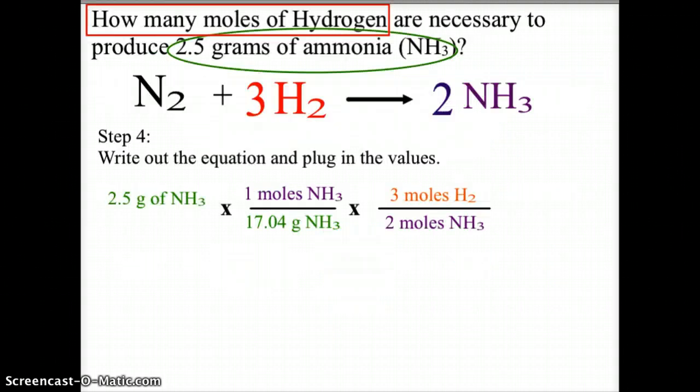So when we set that up, it's going to look something like this. We're going to start with the 2.5 grams of ammonia. We're going to convert that to moles of ammonia, and we use the gram formula mass of ammonia. Nitrogen is 14.01. We have three hydrogens at 1.01, which gives us 3.03, and that gives us a molar mass of ammonia of 17.04.